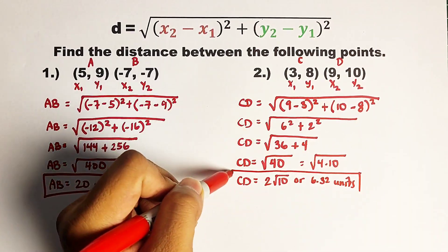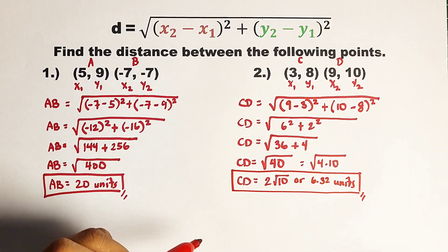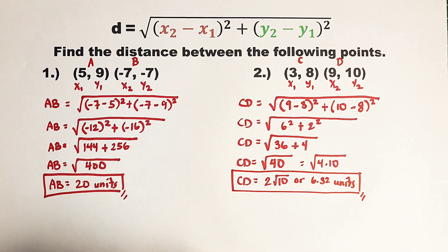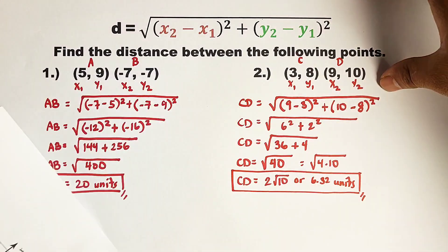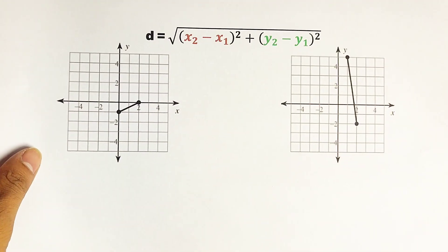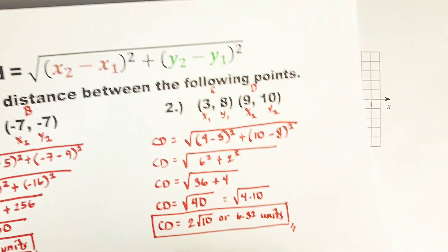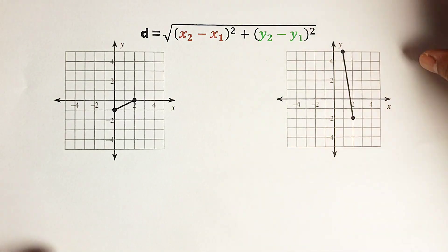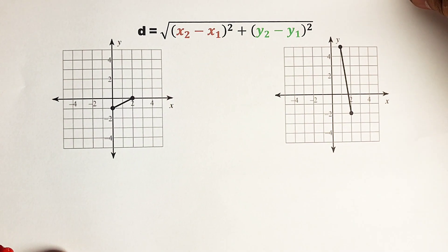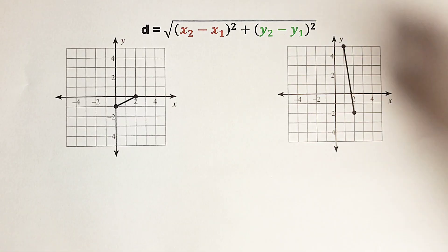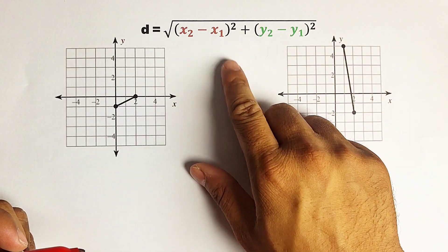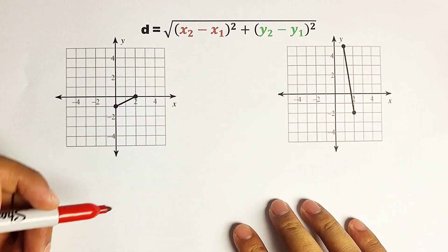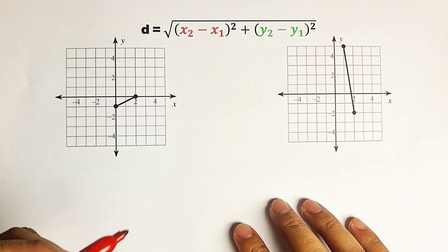So as you can see, guys, there are multiple ways to express your answer for the distance between two points. Now, the next part of our video — what we have here are graphs. Earlier, we were given the coordinates and finding the distance. Right now, I will give you a problem where the given information is the graph. The formula is still the same. As you can see, we don't have the coordinates of each point yet.